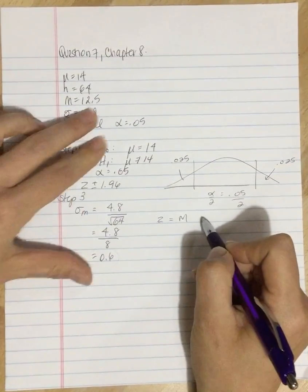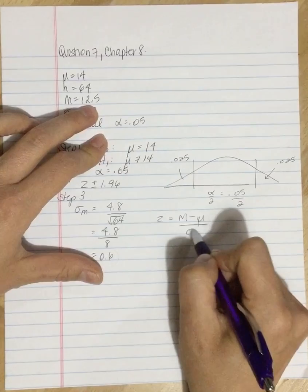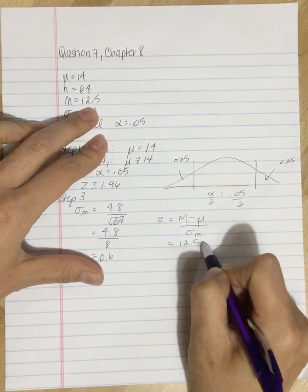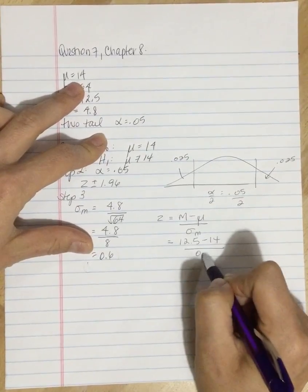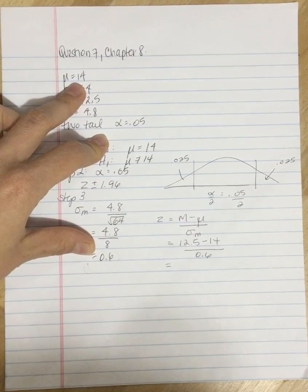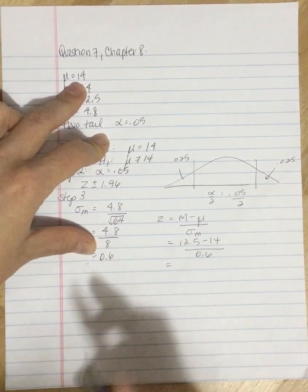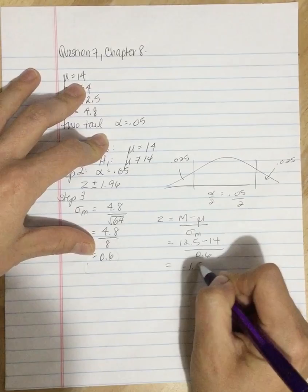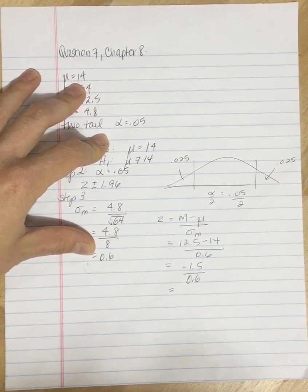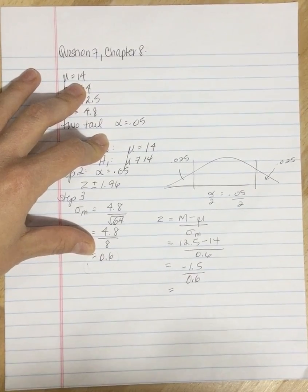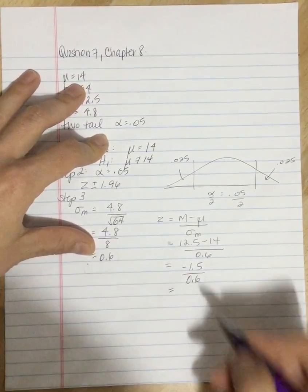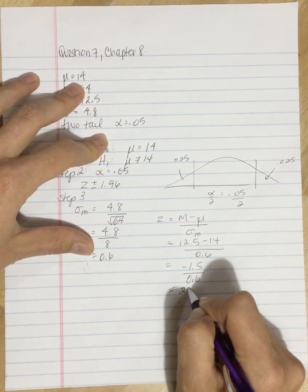We're going to have the mean, subtract the mean of the population divided by the standard error. So we're going to have 12.5, subtract 14, divided by 0.6. So we've got negative 1.5 divided by 0.6, and that is negative 2.5.